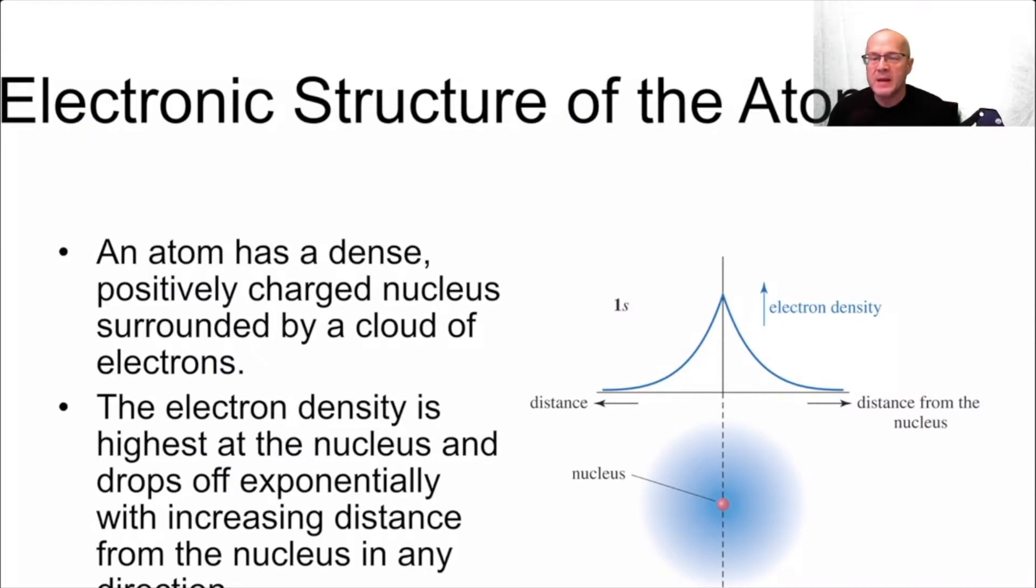First things first. An atom. An atom has a dense positively charged nucleus surrounded by a cloud of electrons. The densely charged nucleus is surrounded by electrons. Protons are in the nucleus, they're positive. Electrons surround the nucleus, they're negative. They're out there somewhere, we don't know where. Now we do know the probability of where they should exist.